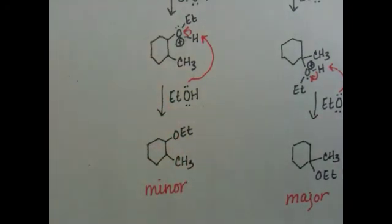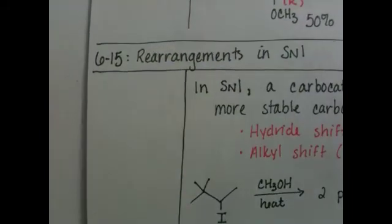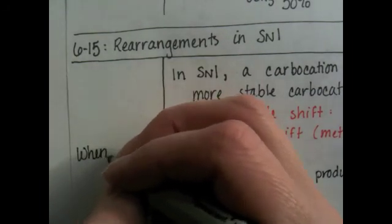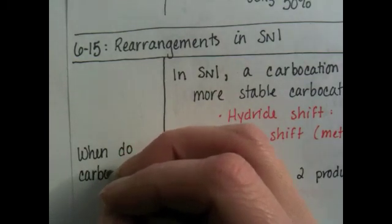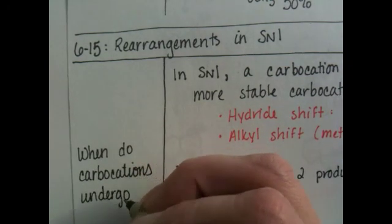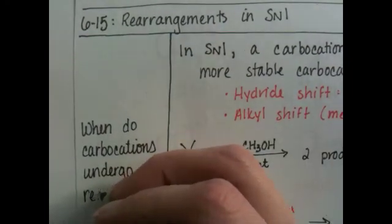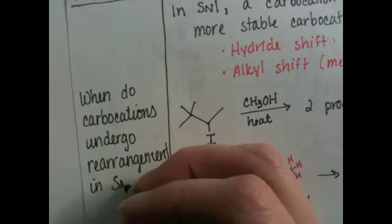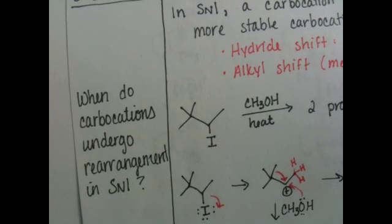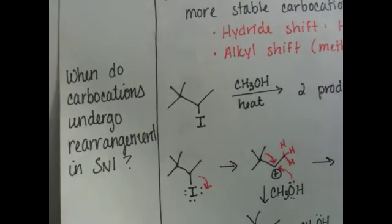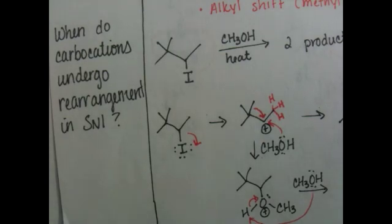I'm going to write some study questions. Actually, just one study question for this section. When do carbocations undergo rearrangement in SN1? I really want you to train yourself to just automatically, as soon as you see a secondary carbocation, I want you to train yourself to attempt to turn it tertiary. And then I also want you to take a couple minutes to summarize the section on rearrangement.